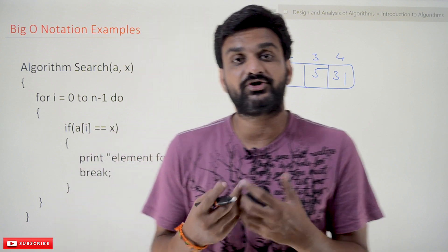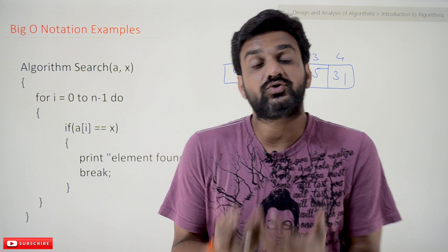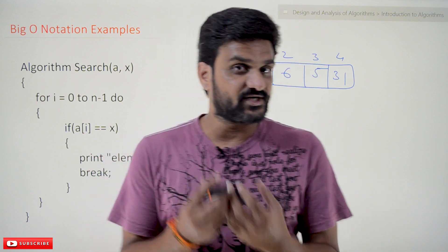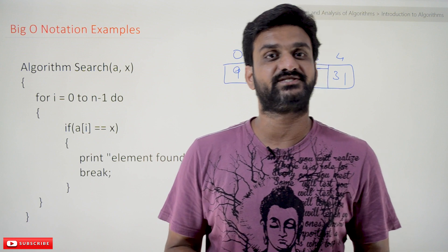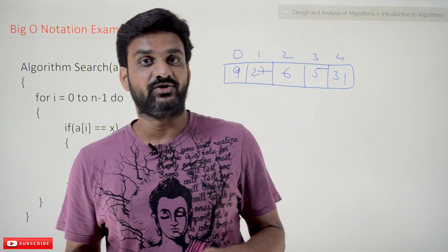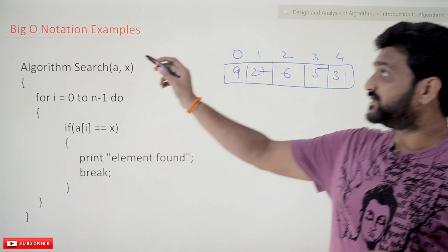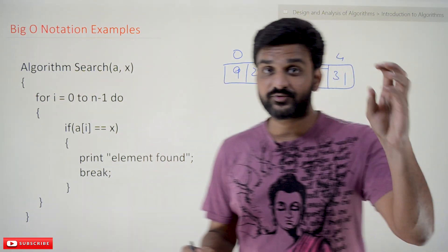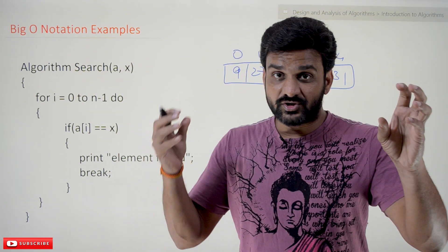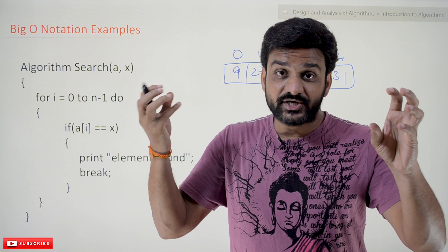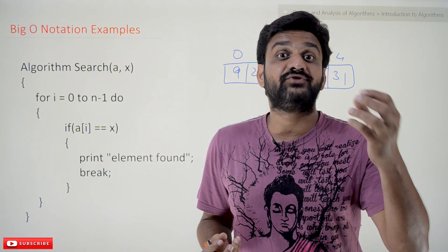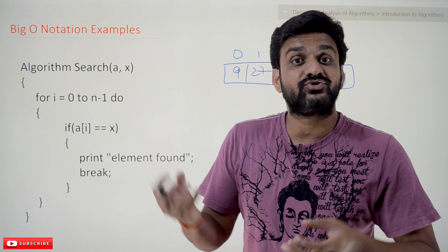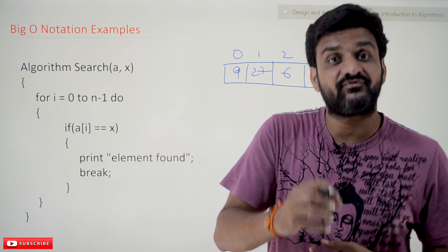Every video on our channel is going to be part of a course or a playlist. Our suggestion is to follow the entire course so that you can have a better understanding of the concepts. The link for the playlist is provided in the description below. Now, Big O notation examples — we will try to understand, as discussed in our previous videos, that asymptotic notations are used to give meaningful statements or to describe the behavior of an algorithm.